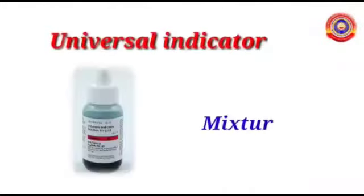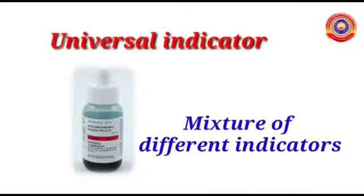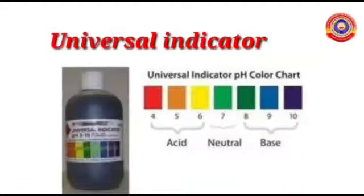Universal indicator. Universal indicator is the mixture of different indicators. Depending on the strength of acidic and alkaline nature of the solution, universal indicator gives different colors. These colors can be compared with the color chart which is affixed outside the bottle.